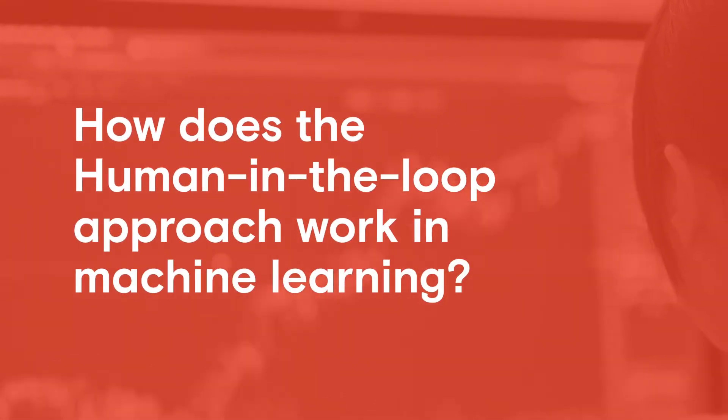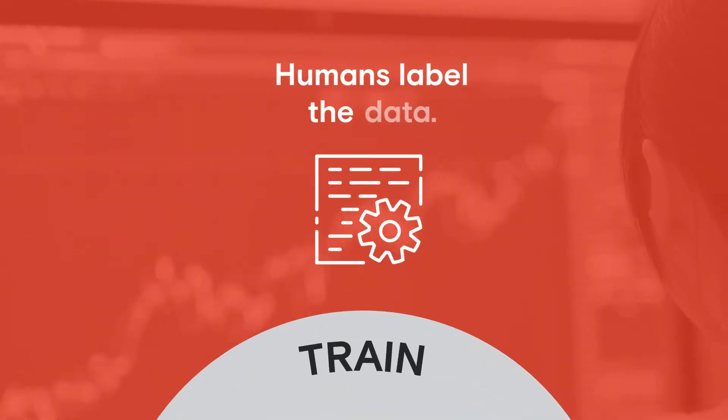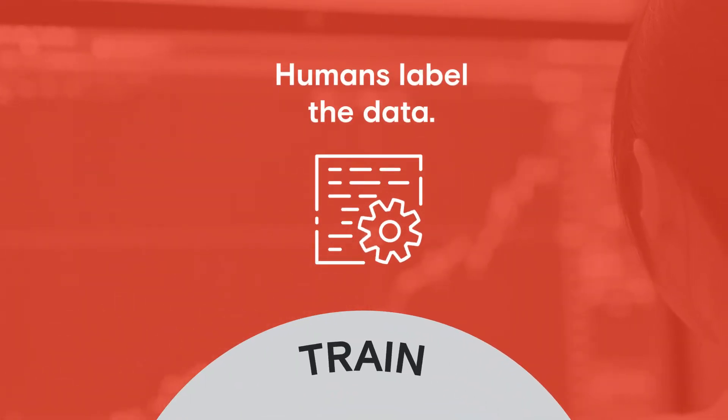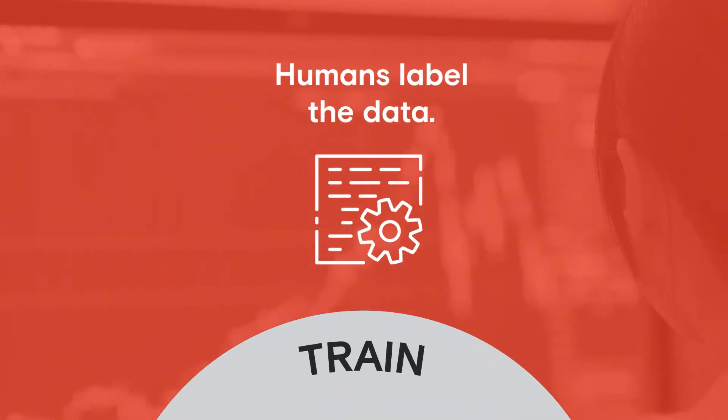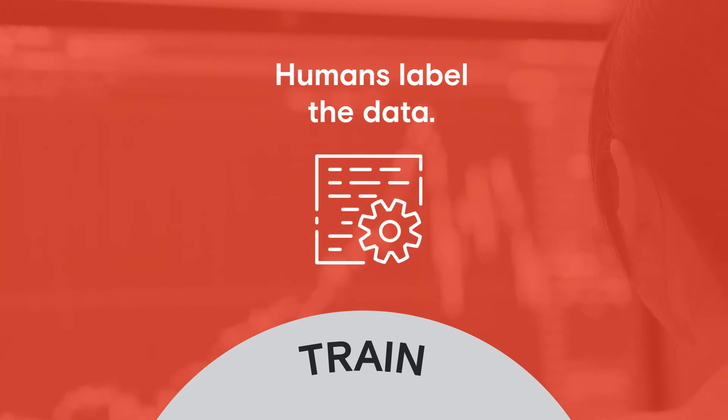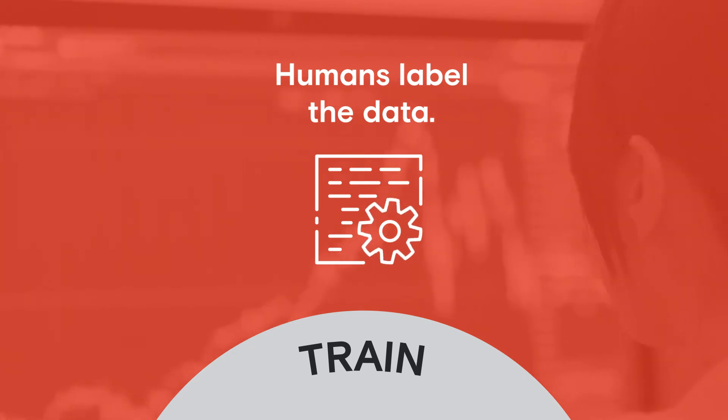So how does the Human in the Loop approach work in machine learning? First, humans label the data. This gives the model high-quality training data used to teach it to make accurate predictions.